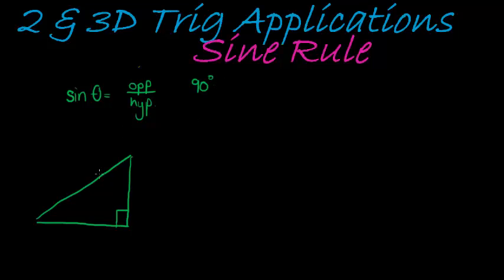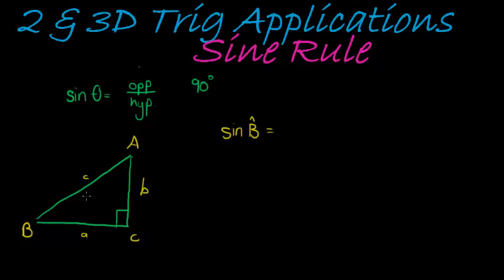We have one angle equal to 90 degrees. Now in this triangle we're going to call the vertices A, B and C as we discussed before with naming a triangle. The opposite side lengths get the lowercase of the vertex letter. So if we are talking about sine of angle B, it is equal to the opposite side, which would be lowercase b, divided by the hypotenuse, which is C.